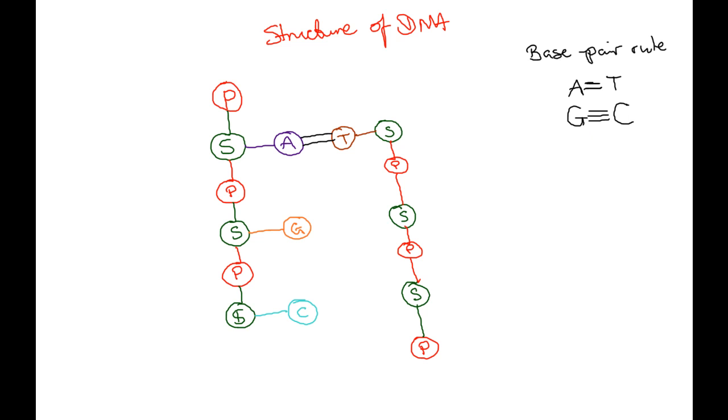And then similarly, between the G, which is our next one, G is going to be complemented to C. And that needs to be bonded with a triple bond. So we signify that with our three lines. This is our triple hydrogen bond. And that shows the bond between guanine and cytosine.